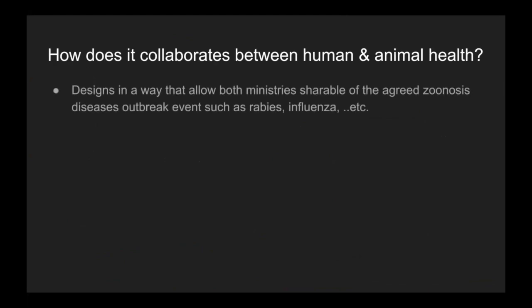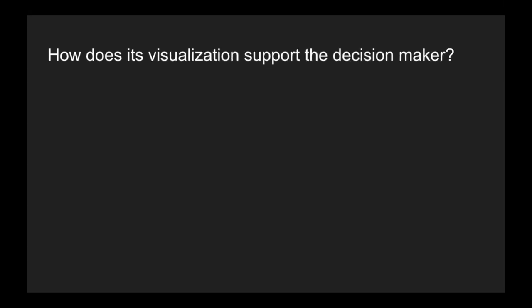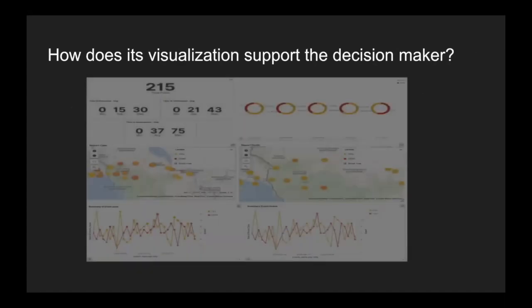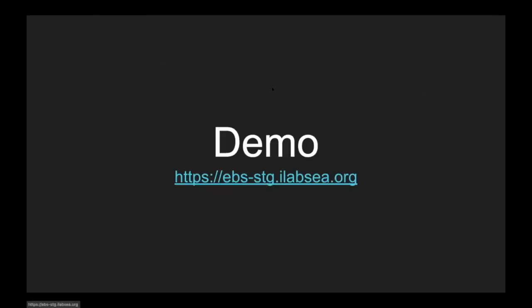For collaboration between human and animal health, we share all agreements on this. As an example — like rabies and influenza — I'm not an epidemiologist so I'm giving examples based on my own understanding of zoonotic disease. In a collaborative joint investigation for a zoonotic disease outbreak, the system supports information sharing on timeliness, completeness, and effectiveness. The data visualization — I'll show you on the real system, not just a screenshot — so let me present the system quickly.